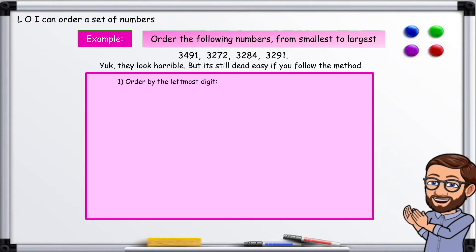Order by the leftmost digit. As you can see all the numbers begin with a 3. They are all the same so that was no help. Okay then look at the next digit along.